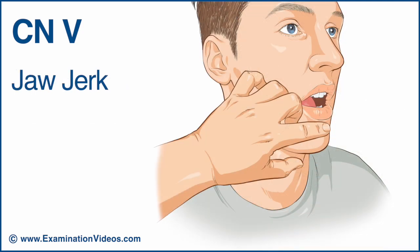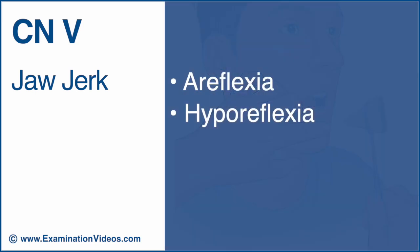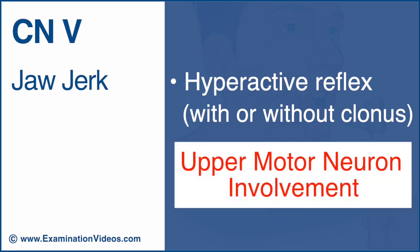To perform the jaw jerk reflex, place your finger on the patient's chin and ask them to slightly open their mouth. Strike your finger with a reflex hammer. Typically, this reflex is absent or only slightly present, therefore making areflexia or hyporeflexia difficult to detect. However, the presence of a hyperactive reflex with or without clonus suggests upper motor neuron involvement.